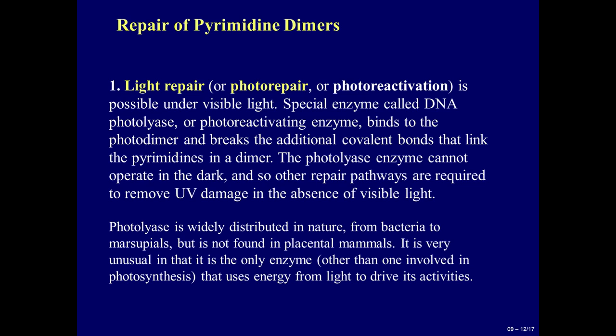There are two types of repair of pyrimidine dimers. The first is light repair, or photorepair, or photoreactivation, which is possible under visible light. A special enzyme called DNA photolyase, or photoreactivation enzyme, binds to the photodimer and breaks the additional covalent bonds that link the pyrimidines in the dimer. The photolyase enzyme cannot operate in the dark, so other repair pathways are required to remove ultraviolet damage in the absence of visible light. Photolyase is widely distributed in nature, from bacteria to marsupials, but is not found in placental mammals. It is very unusual in that it is the only enzyme, other than those involved in photosynthesis, that uses energy from light to drive its activity.